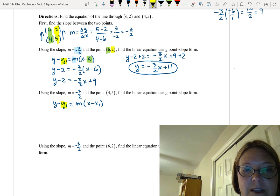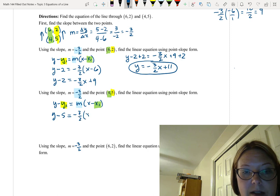So let's go ahead and go back to y minus y1 equals m times (x minus x1). Again the y1 is going to be the 5, the second part of the coordinate point. The x1 is going to be the 4, the first part of the coordinate point, and the slope is that negative 3 halves.